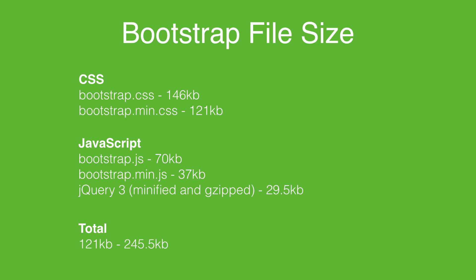If we add the JavaScript library of Bootstrap to our project, we tack on another 70 to 37 KB just for the components. And then they're dependent on jQuery so we can add another 29.5 KB to that. The result is a Bootstrap project can contain anywhere from 121 KB to 245 KB — and that's just the framework itself without taking into account your own static assets or any external data that you'll be downloading.